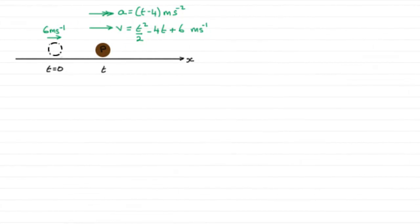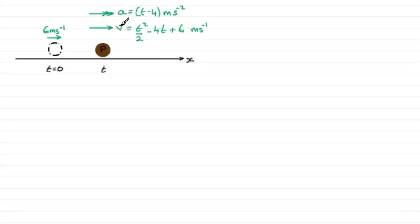For this next part we've got to find the values of T when P is instantaneously at rest. I've updated V with the answer we found in the previous part, where we had to express V in terms of T. So when is P going to be instantaneously at rest? Well, it's going to be when V equals 0.